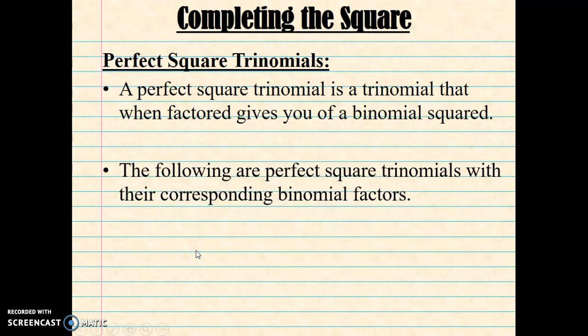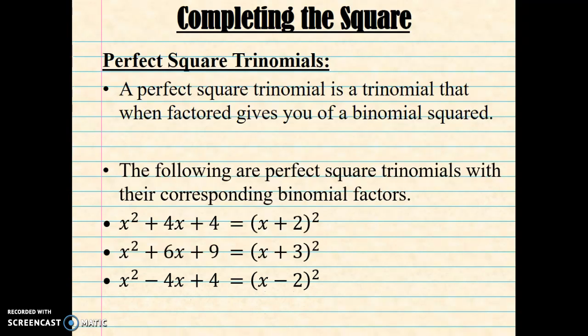The following are examples of perfect square trinomials with their corresponding binomial factors: x squared plus 4x plus 4 equals x plus 2 squared; x squared plus 6x plus 9 equals x plus 3 squared; x squared minus 4x plus 4 equals x minus 2 squared; and x squared minus 6x plus 9 equals x minus 3 squared.